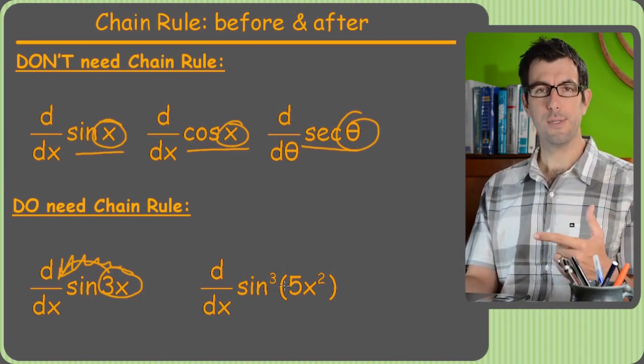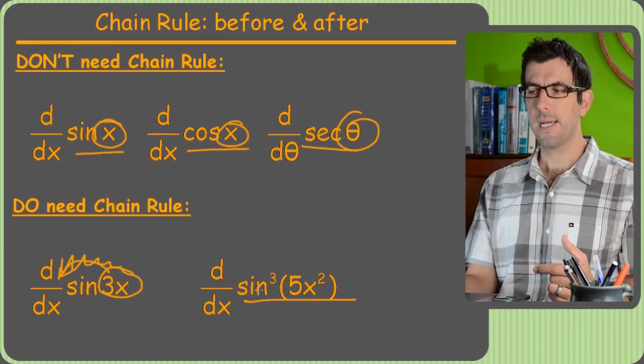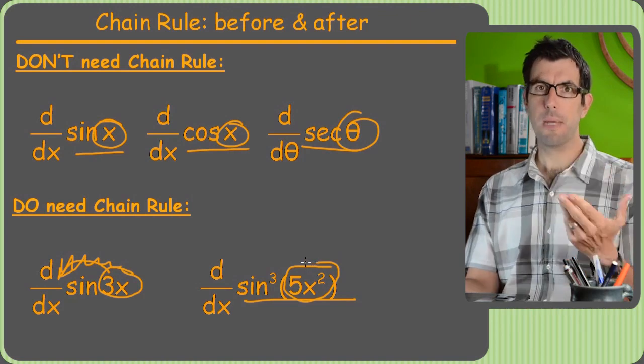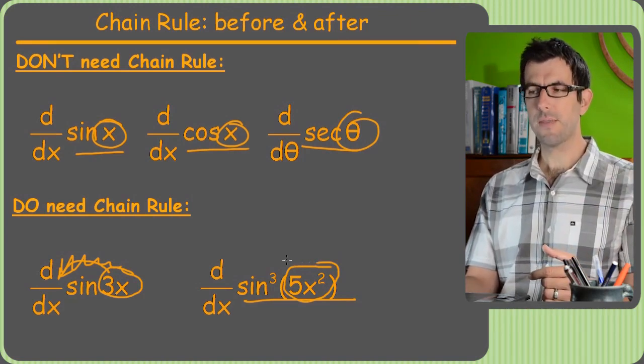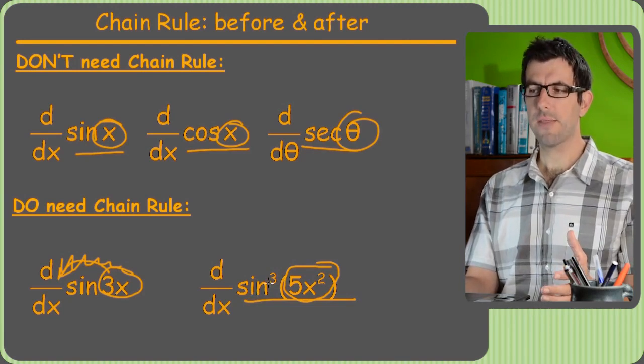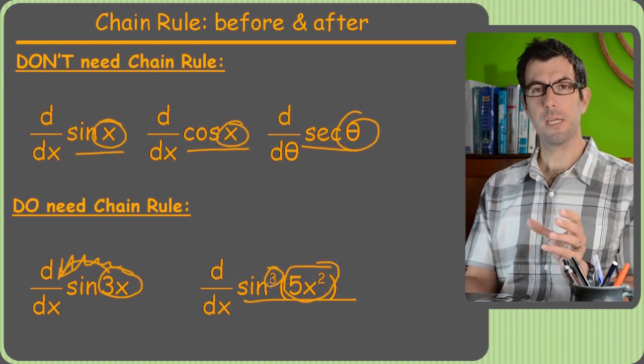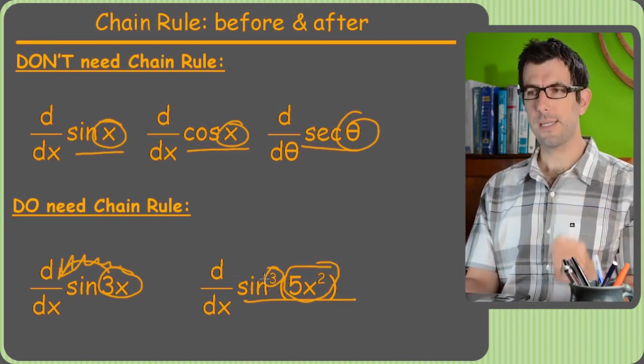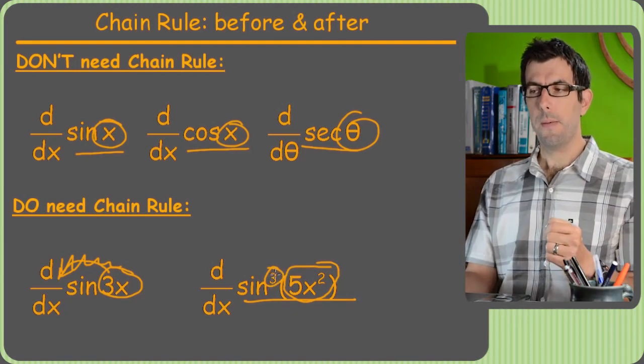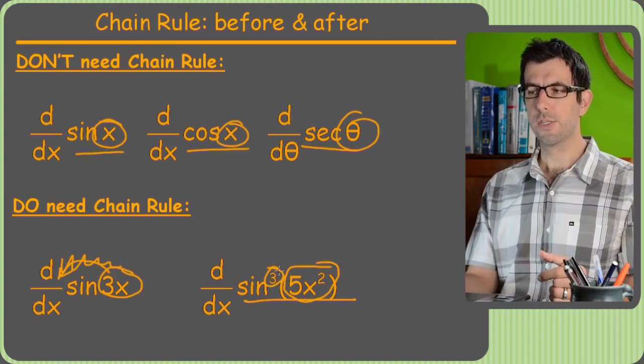Now this one has kind of a double whammy and this will get into the really hard problems. One reason we can't do this problem without the chain rule is that it's not just a sine of x, it's a sine of 5x squared. So right away you should be thinking oh man I need a chain rule. But it turns out this isn't really a sine or cosine problem. This is really a power problem because we've got the sine to the third power.